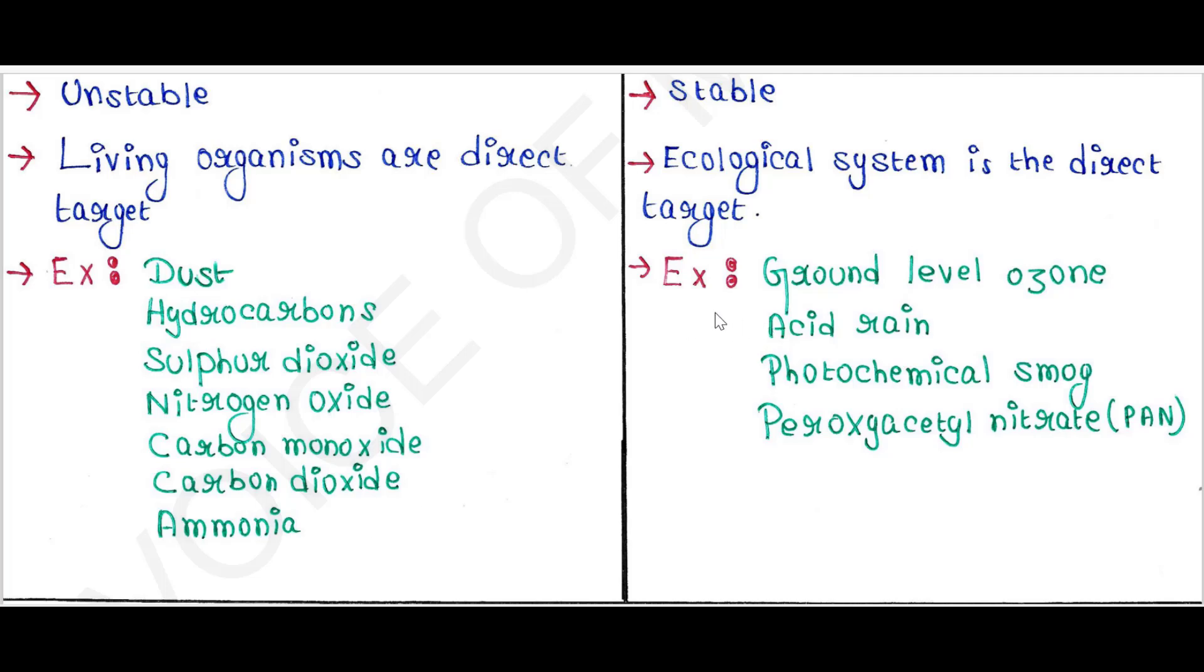Examples of secondary pollutants are ground level ozone, acid rain, photochemical smog, and peroxyacetyl nitrate or PAN.